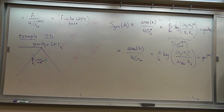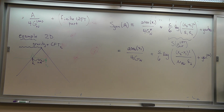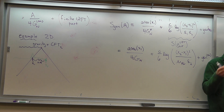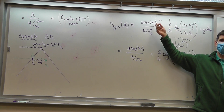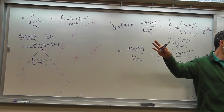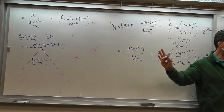Well, because one over G_Newton is divergent, G_Newton is going to zero. The point is you have gravity plus some quantum fields. When you integrate out those quantum fields, one over G_Newton gets a negative infinity shift. It's a shift by negative infinity.